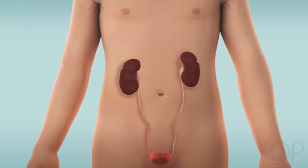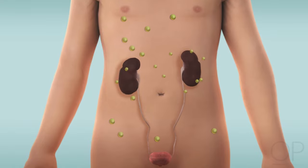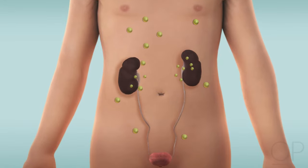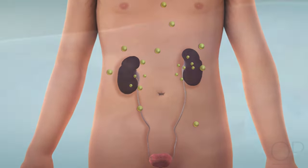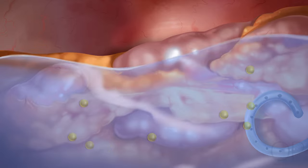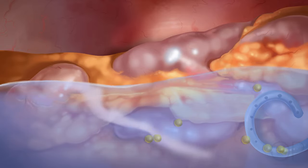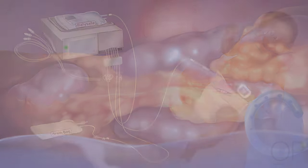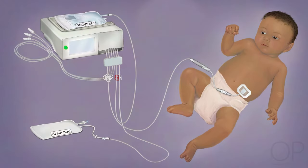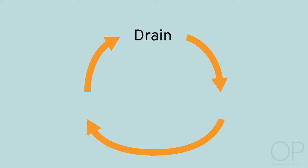Let's review some concepts now. When the kidneys stop working, we need dialysis. Dialysis removes toxins and extra fluid from the body. Peritoneal dialysis uses a sugary solution that goes into your child's abdomen through a special tube called a catheter. The steps of peritoneal dialysis are drain, fill, and dwell.